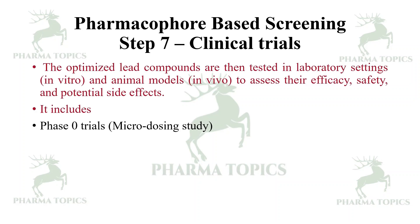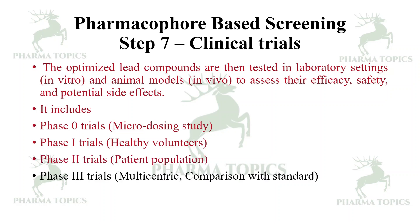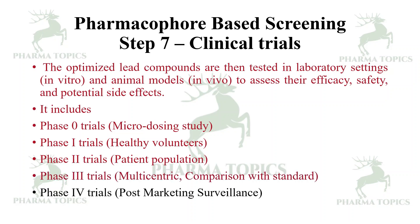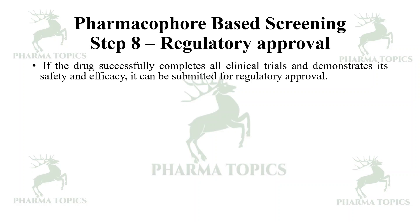Clinical trials include Phase 0 trials — a micro-dosing study — then Phase 1 trials in healthy volunteers, then Phase 2 trials in the first patient population study, then Phase 3 trials which is a multicentric trial that usually compares with the standard treatment, then Phase 4 trials which is post-marketing surveillance.